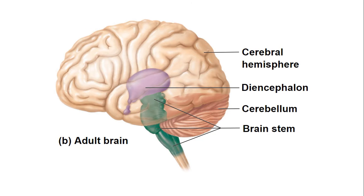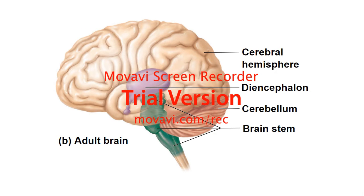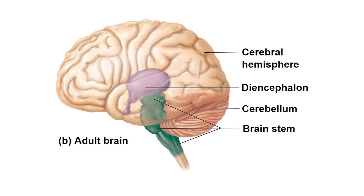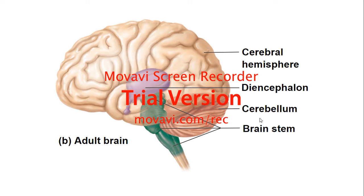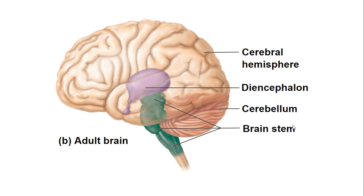We will talk about the diencephalon in more detail, but the hypothalamus gets a lot of attention because it works with the pituitary gland to help regulate the endocrine system, which is very important. We'll also talk about the cerebellum — what it does — and then the brainstem, which is composed of the midbrain, the pons, and the medulla. The brainstem has important functions that we'll cover as well.